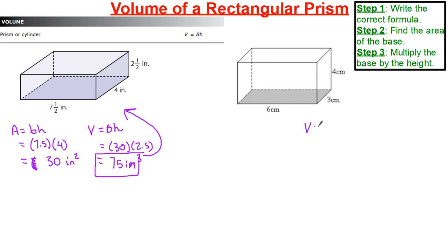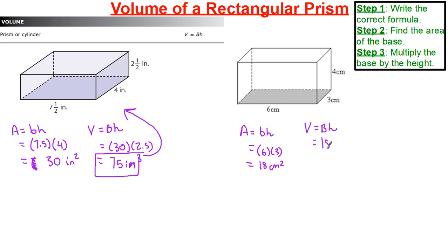Let's try a second example. Volume is equal to base times height. The only thing we're calculating differently is the base layer. Base times height — or length times width — we have 6 multiplied by 3, which gives us 18 centimeters squared. The area of the base, 18, is multiplied by our height of 4. So 18 multiplied by 4 gives us 72 centimeters cubed.